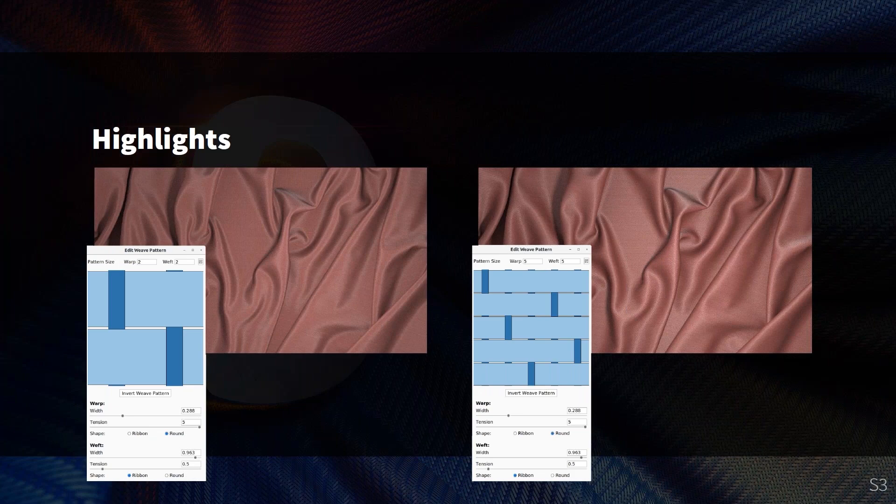This is simply due to the weaving pattern and the way it's set up. If you scrutinize the details of the center, you can see that there is a round vertical yarn that's very straight, and then there is a loosely woven flat yarn going over the straight yarns. This actually gives rise to this split highlight and these long soft highlights.